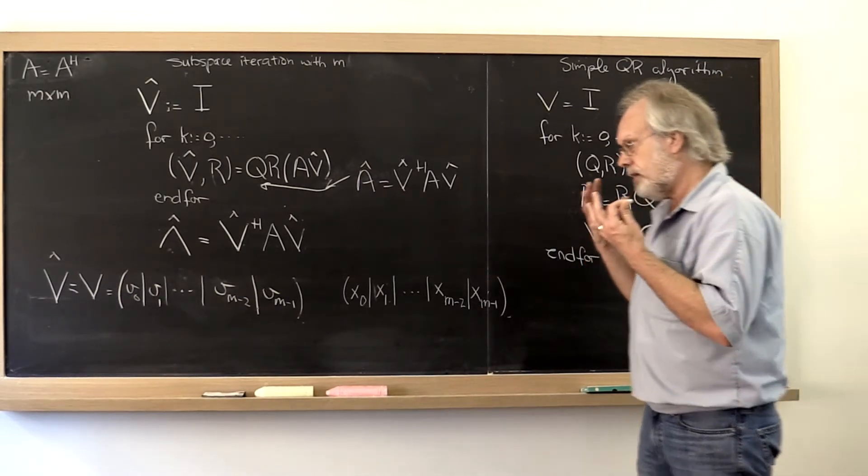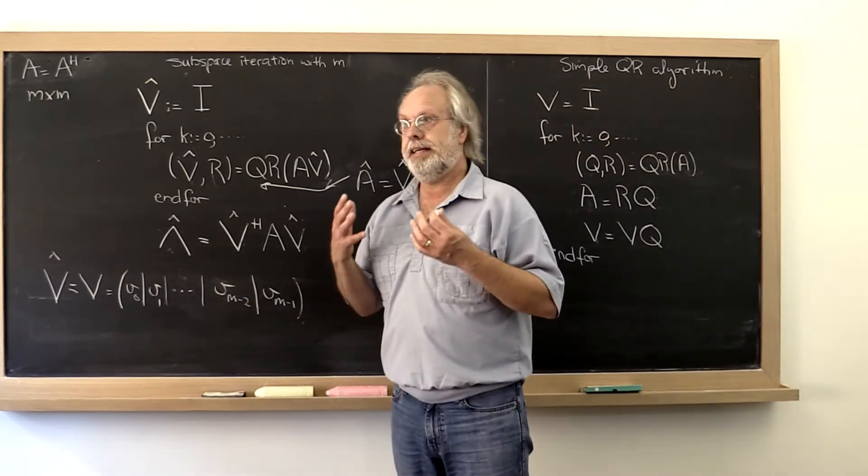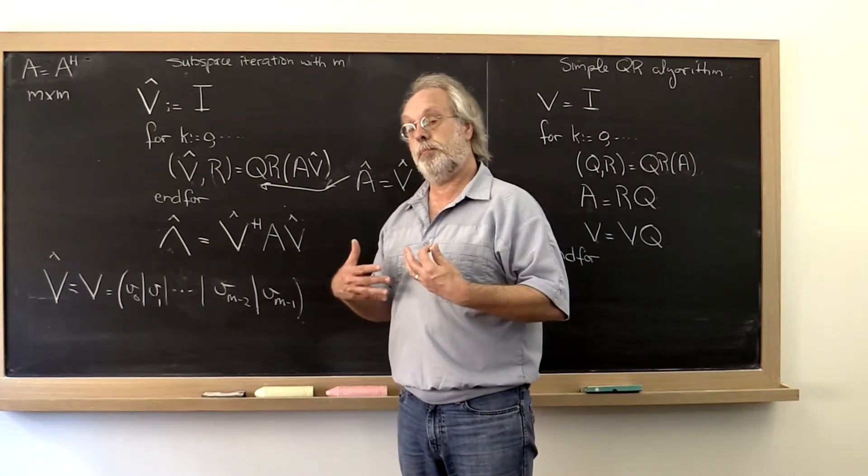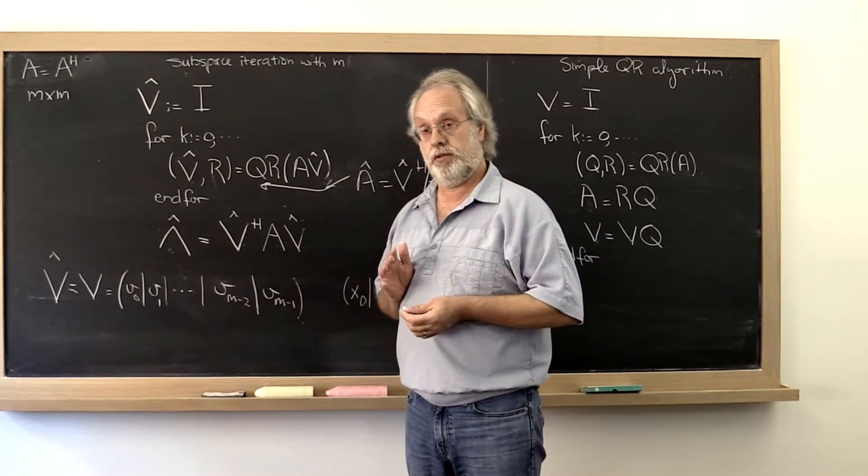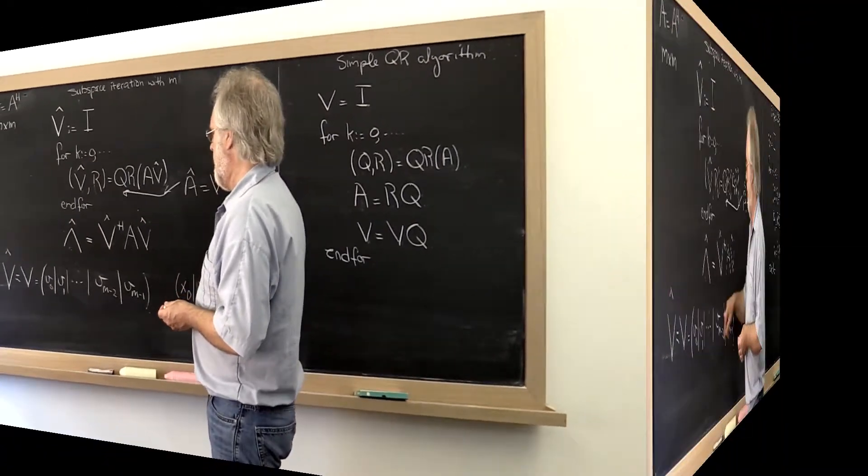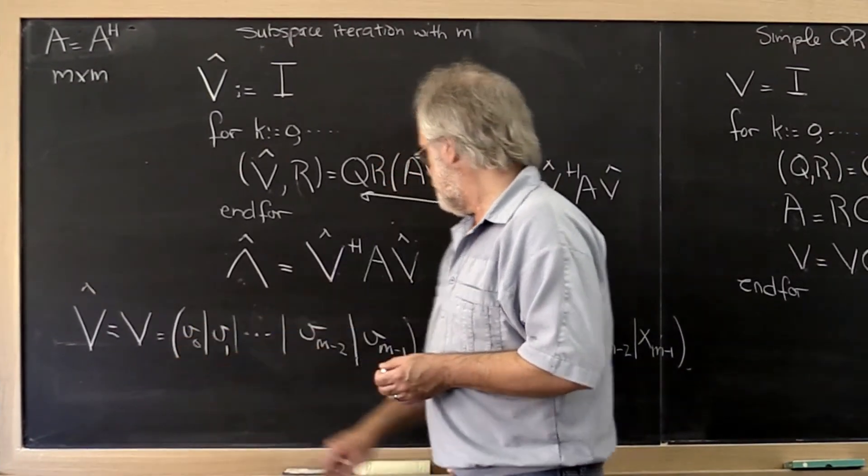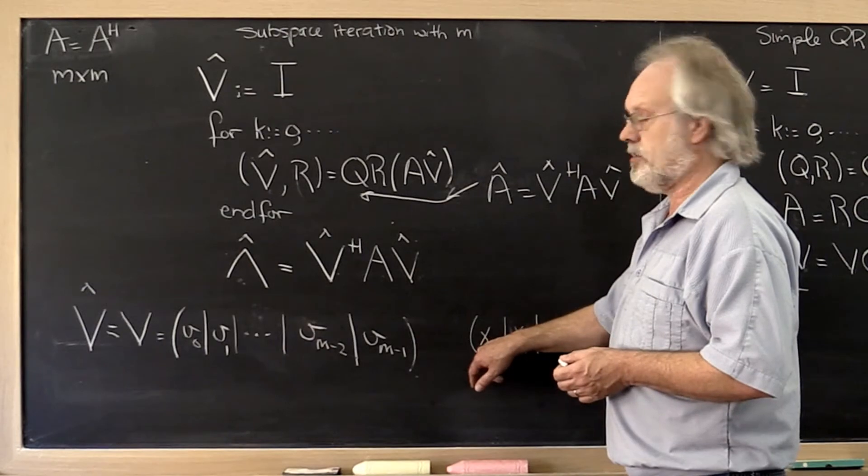Now if you think back about the analysis of how fast the power method converges, what you notice is that this vector converges to x0.